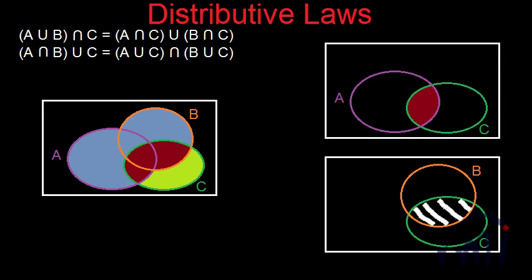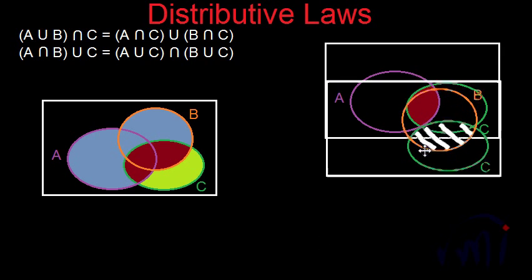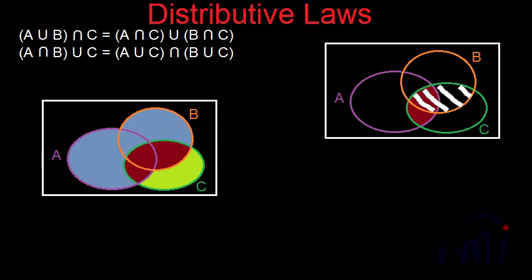B intersection C will be represented in the second diagram — the portion common to both B and C. The area where we have either the chocolate brown color or the white slanting lines represents A intersection C union B intersection C. And this is the same as the portion in the first diagram shaded in chocolate brown. So this was the explanation of the first distributive law using Venn diagrams.